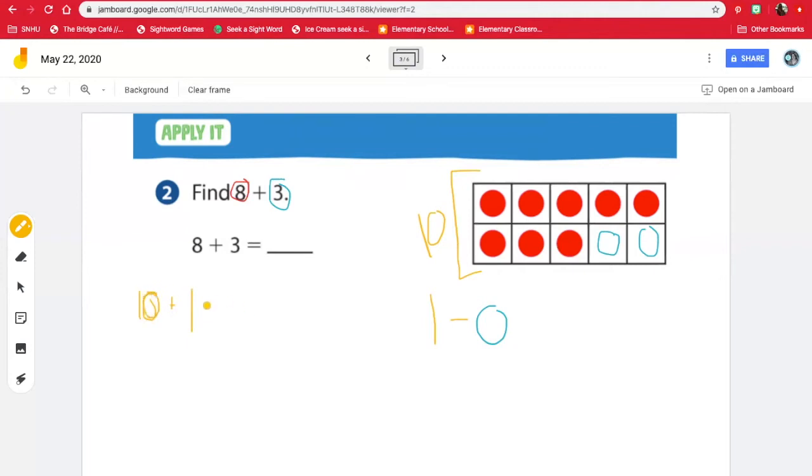So we want to add 10 plus 1. 10 plus 1. Well, what's one more than 10? If I count, we have 9, 10, 11. One more than 10 is 11, which means 8 plus 3 is 11. And to double check my work, I could count the 8 red, so 8 red, 9, 10, 11, and count the three blue. And my answer is correct. Let's move on.